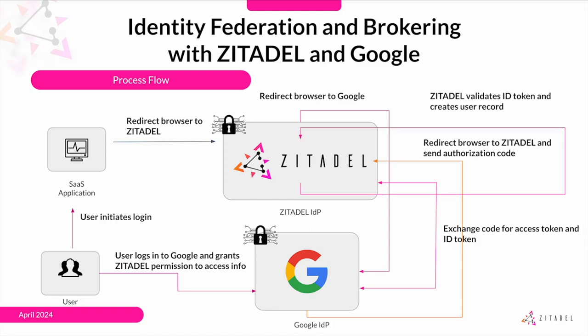Then, Citadel validates the ID token to authenticate the user's identity. Citadel creates a session for the user, logs the user into Citadel, and may create a user record if one does not already exist. Finally, Citadel issues and sends its own tokens that the SaaS app can use to make API calls on behalf of the user.